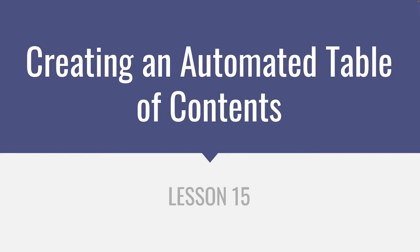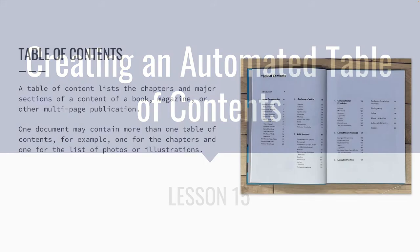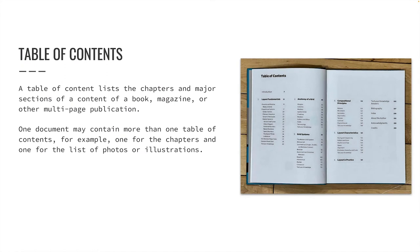Lesson 15: Creating an Automated Table of Contents. In this lesson, we will build on what we learned about multi-chapter books and learn how to create an automated table of contents for our book file. Before we jump into InDesign, let's define what a table of contents is. A table of contents is where you list the chapters and major sections of a book, magazine, or other multi-page publication.